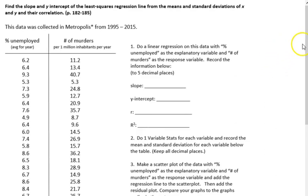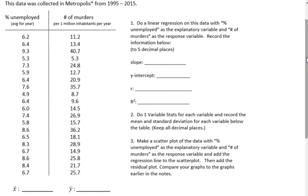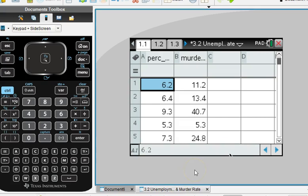Now, if you have the data, you can find the line of best fit by doing your regression on your calculator. So we're going to do that first. Enter the data, percent unemployed and number of murders, into your calculator. I already have mine in, so I would suggest that you go ahead and pause your video and do that right now.